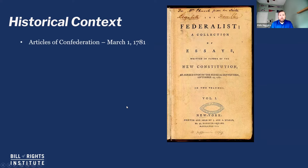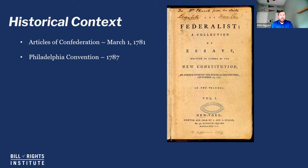The Articles of Confederation were a loose governing confederation, and it had become clear to the states that they weren't functioning as best as they could. So a group of delegates met in Philadelphia in 1787 with the intent of revising those articles. What came out of that convention was actually an entire new constitution. In order to get that constitution passed, they needed to send it out to the states to get it ratified, or legally approved. That happened on September 17, 1787.